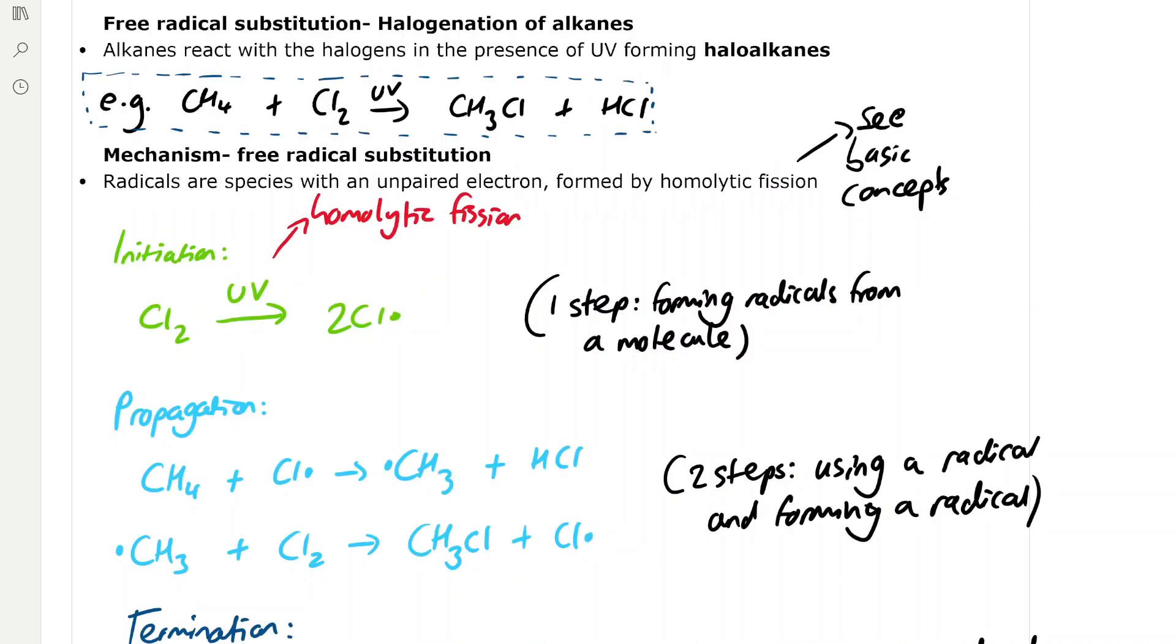Free radical substitution is an important mechanism useful for the halogenation of alkanes. Alkanes react with halogens in the presence of ultraviolet radiation forming haloalkanes.